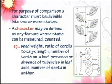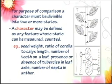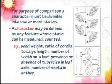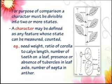For the purpose of comparison, a character must be divisible into two or more states. A character may be defined as any feature whose state can be measured or counted. For example: seed weight, ratio of corolla to calyx length, number of teeth on a leaf, presence or absence of tubercles in leaf axils.